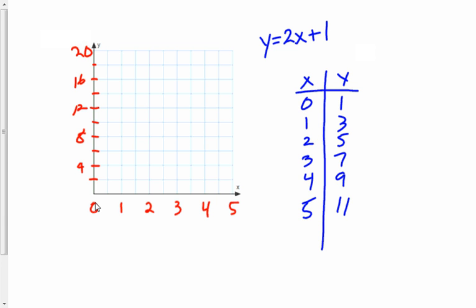And now I'm going to graph those points. The point 0, 1 is now right here. The point 1, 3 is right here. 2, 5, 3, 7, 4, 9, and 5, 11. And notice what happened here this time. The line flattened out.